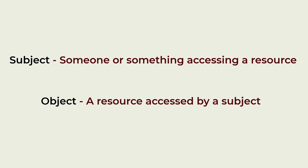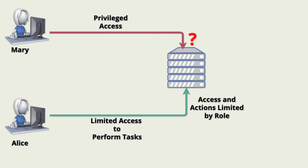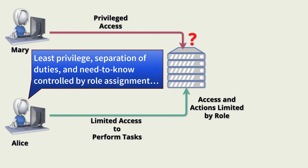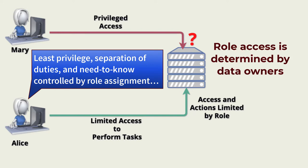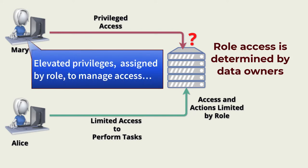The resources accessed are objects. In this example, Alice is accessing the financial application in her role as an accounts payable clerk using her day-to-day account. Authorization settings limit her access to only entering invoices and new vendor information. Mary has a day-to-day account, but she has logged into the application with a privileged account — an account that can enter users into roles with data owner-approved access.